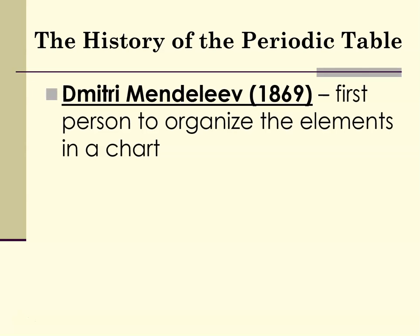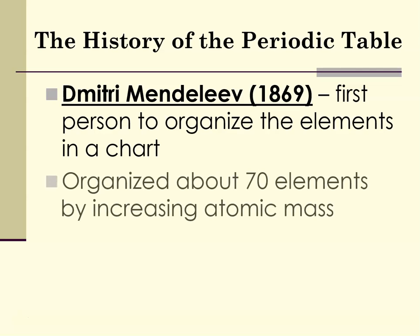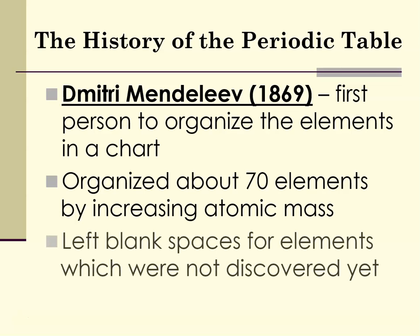Dmitry Mendeleev was the first person to organize the elements into a chart back in 1869. He organized about 70 elements that were known at that time, and he organized them according to increasing atomic mass. He left blank spaces for elements that he knew had not yet been discovered.